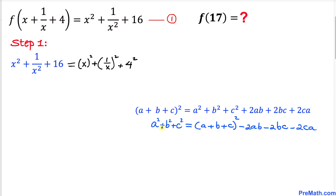So therefore this equation can be written as: a² + b² + c² = (a + b + c)² − 2ab − 2bc − 2ca. Now let's compare this part on the right-hand side with our expression.